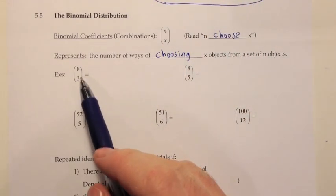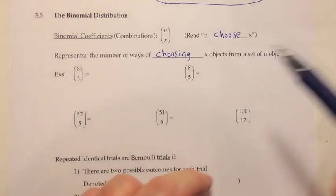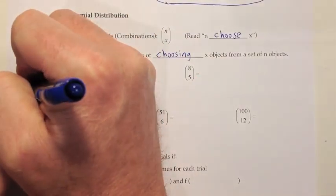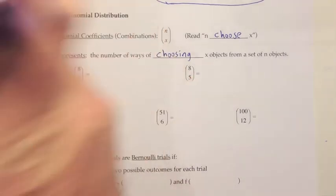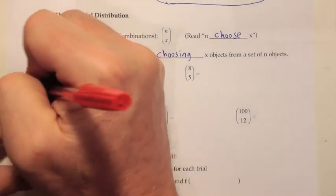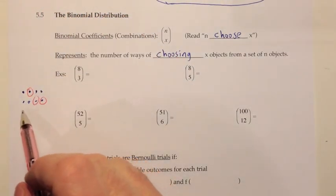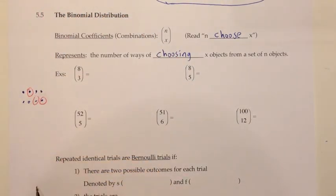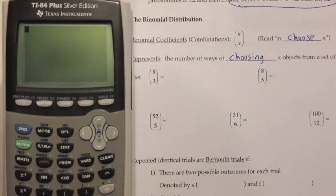So if I'm going to calculate 8 choose 3, what it represents is: if I had a group of 8 things and I was going to choose 3 of them — maybe this one, this one, and that one — that's one way of choosing 3 from the group of 8. But how many different ways are there that are possible? It turns out there's perhaps more than you might think, but the way you calculate that on the calculator is fairly simple.